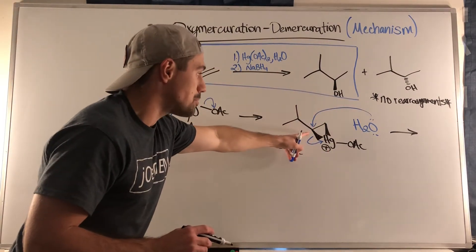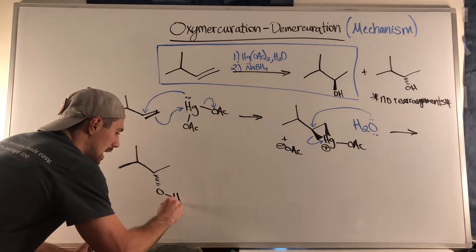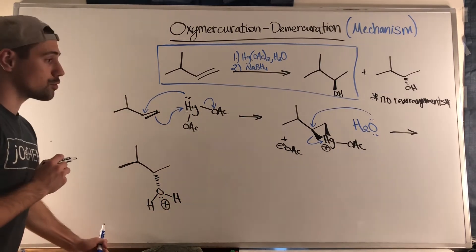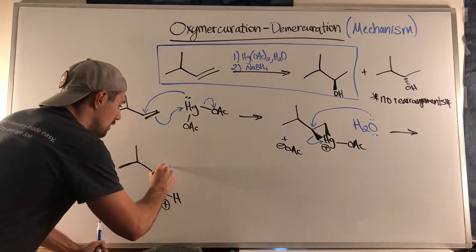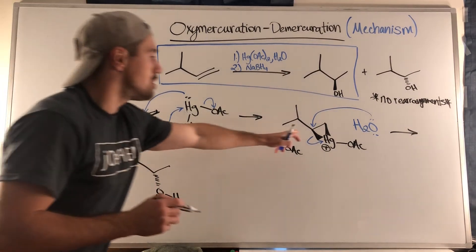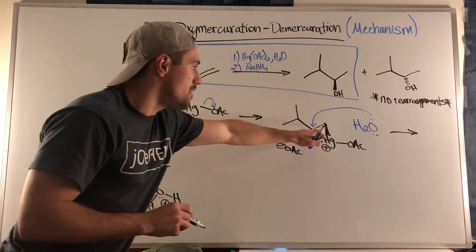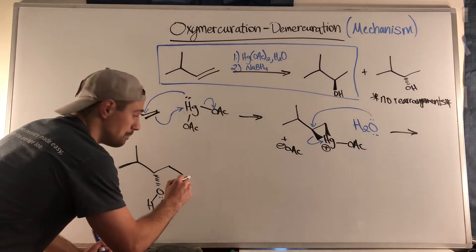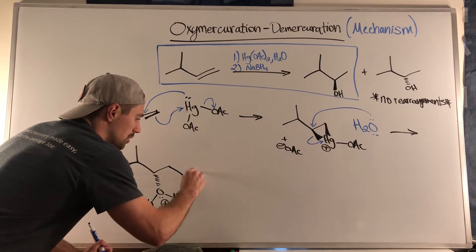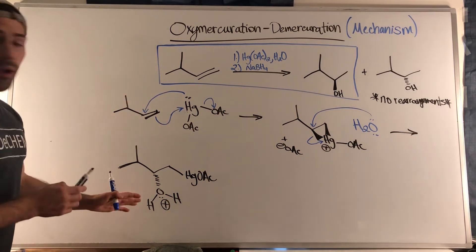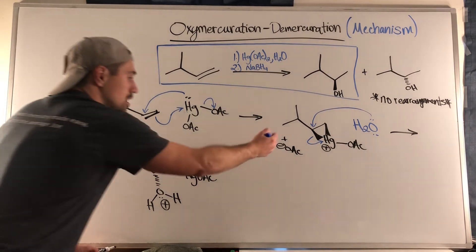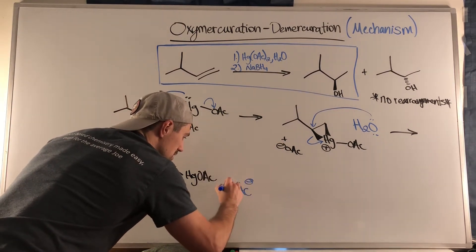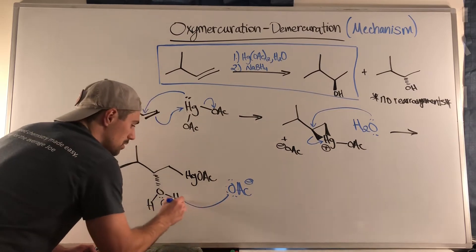Water attacks from the back side, which is a dash because we have a wedge on the other face. So we get an oxygen with H, H and a positive formal charge. This is a stereocenter, and because this other carbon is not a stereocenter I'll draw it as a straight line. We still have the HgOAc on the less substituted carbon. The acetate that was kicked off in the first step then comes back to help with cleanup.